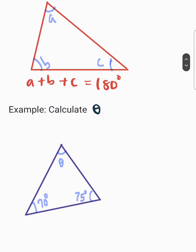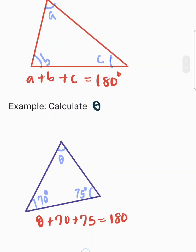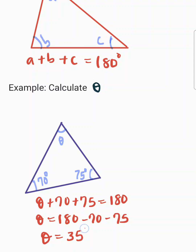Calculate the value of theta. We have 70 degrees, 75 degrees, and theta. Using the rule, theta plus 70 degrees plus 75 degrees must equal 180 degrees. Solving further, theta equals 180 minus 70 minus 75 degrees, which gives us theta equal to 35 degrees.